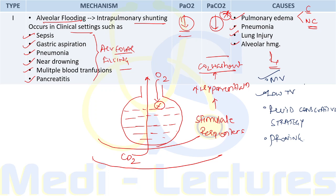Treatment of Type 1 respiratory failure, especially ARDS, includes mechanical ventilation with low tidal volume of 6 ml/kg rather than the usual 12 ml/kg, a fluid conservative strategy giving less fluids to the patient, and prone position ventilation.